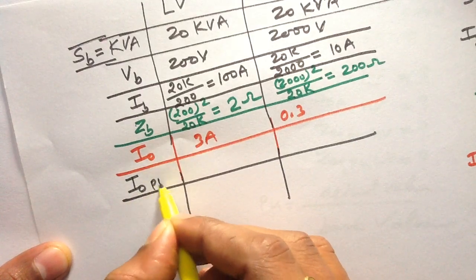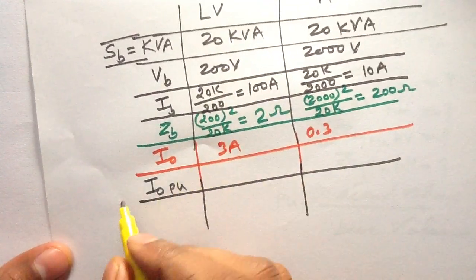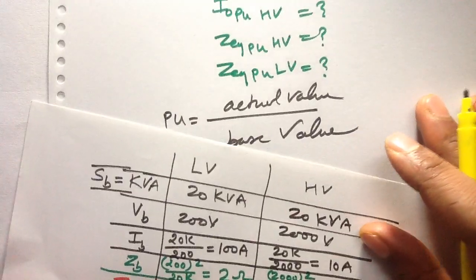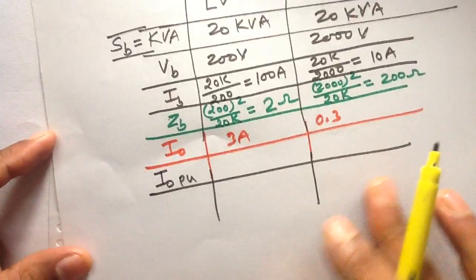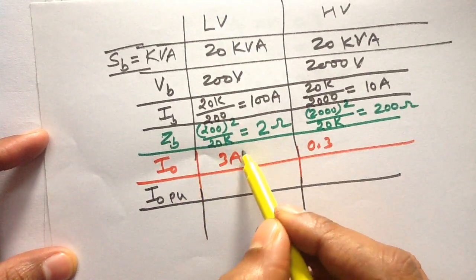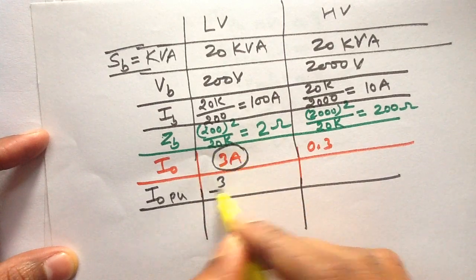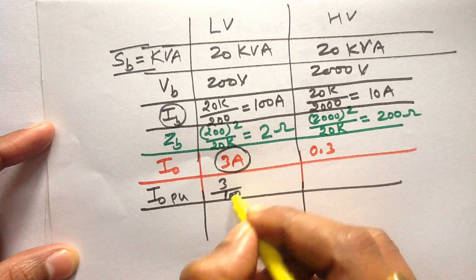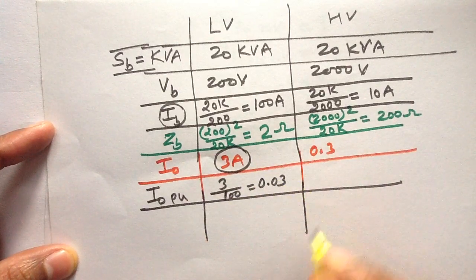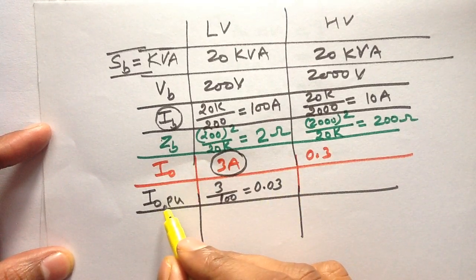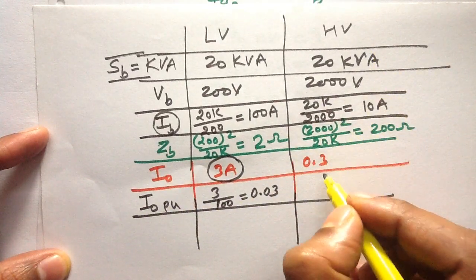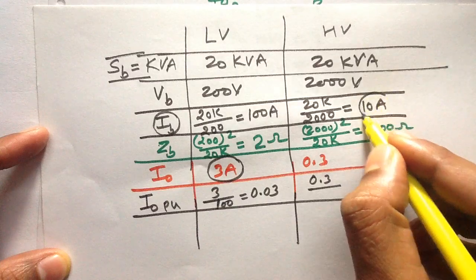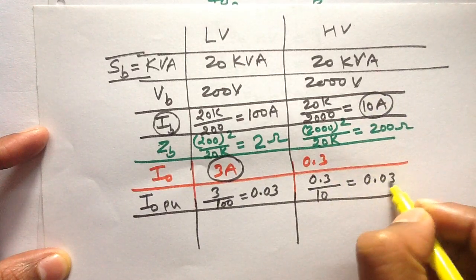The exciting current in per unit on LV side: per unit value equals actual value divided by base value. The actual value of the exciting current on LV side is 3 Ampere and the base value of the current on LV side is 100 Ampere, so it will be 0.03 per unit. The exciting current on HV side in per unit: actual value 0.3 Ampere divided by base value 10 Ampere also gives 0.03 per unit.